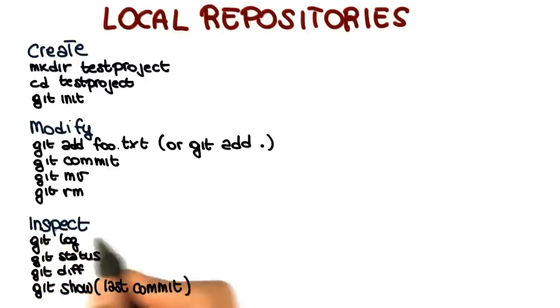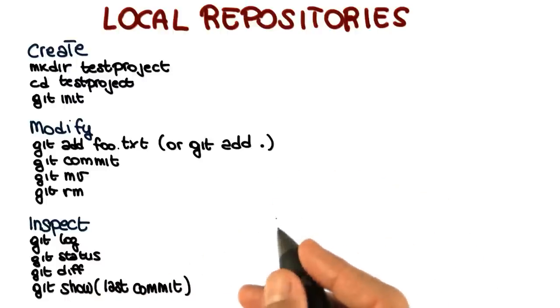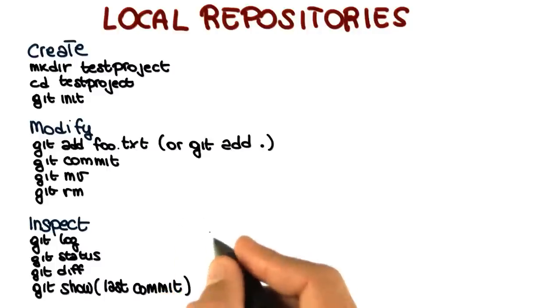Finally, the third category is the category of commands that we can use to inspect the content of the repository. And this set includes git log, that we can use to see the log of the repository. Git status, that can give us important information about the status of the files in the repository. Git diff, that we can use to see the differences between, for example, our local files and the remote files. And finally, git show, that will show us information about our last commit.